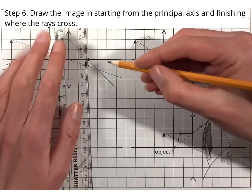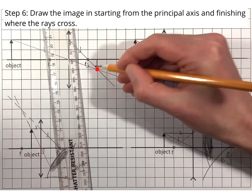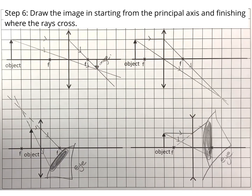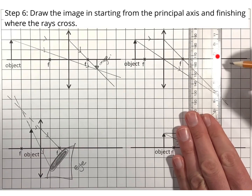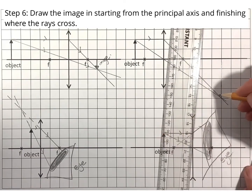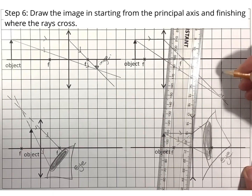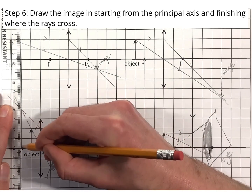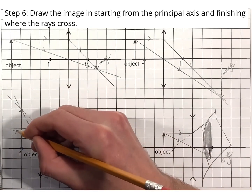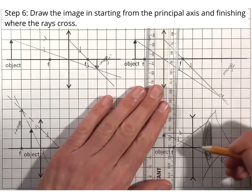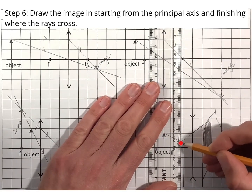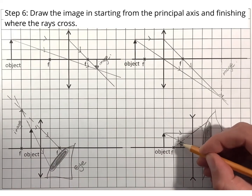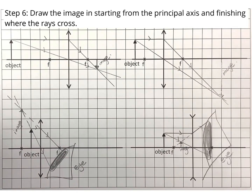Now you're ready for the final step, which is to draw in the image. Start from the principal axis and draw down to where the rays cross — the arrowhead is always where the rays cross. Repeat this for each diagram, drawing from the principal axis to where the rays cross. And there you have your completed ray diagrams.